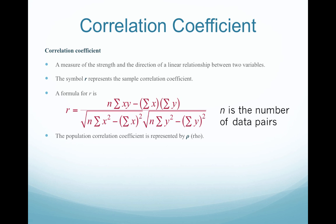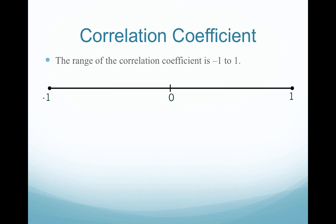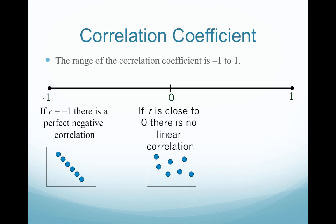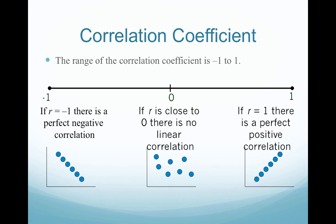R is the sample correlation coefficient coming from sample data. The population correlation coefficient is represented by the Greek letter rho — it looks kind of like an italicized P. The range of the correlation coefficient is negative 1 to 1. If R equals negative 1, there is a perfect negative correlation. If R is close to 0, there is no linear correlation. And if R equals 1, there is a perfect positive correlation.